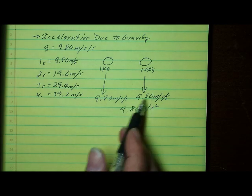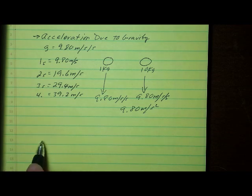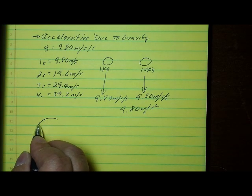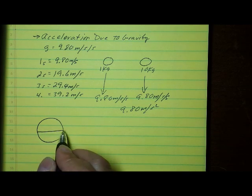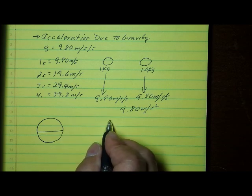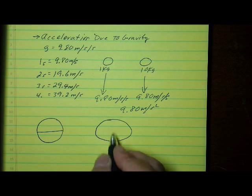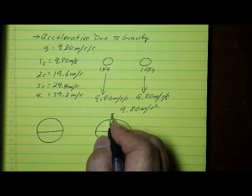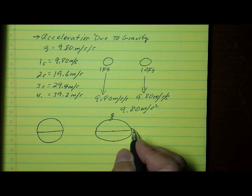Now, the acceleration due to gravity is generally 9.80 meters per second squared, but that actually varies slightly depending on where you are on the surface of the Earth. That's because the Earth is not a perfect circle — the Earth is actually what's referred to as an oblate spheroid. It's sort of wider at the equator and thinner from pole to pole, which means that if you're standing at the North Pole, you're actually closer to the center of mass of the Earth than if you're standing on the equator.